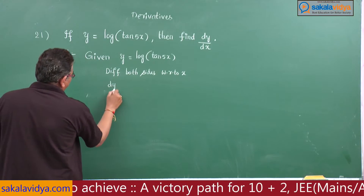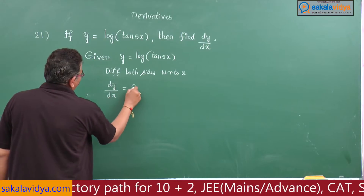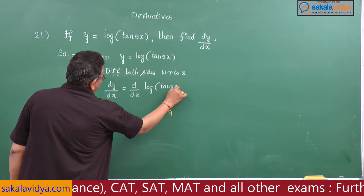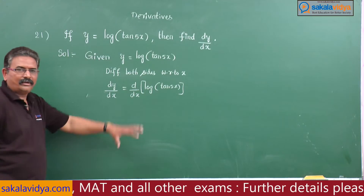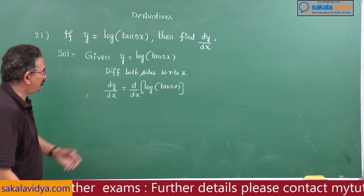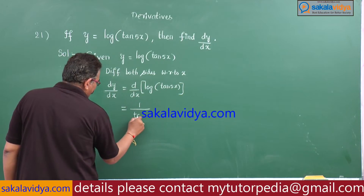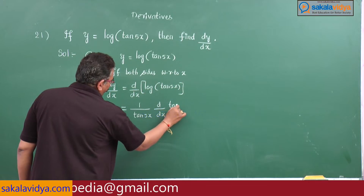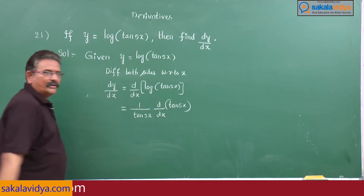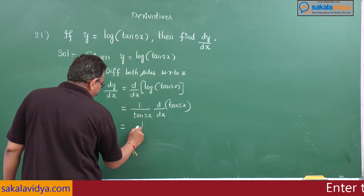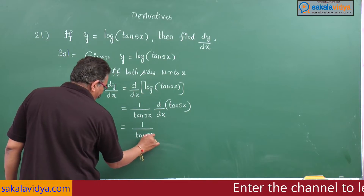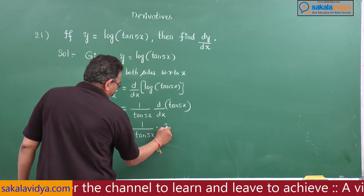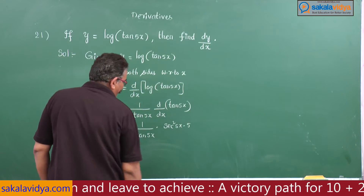dy/dx equals d/dx of log of tan 5x. Using the log differentiation rule — log u differentiates to 1/u times du/dx — this gives 1 by tan 5x into d/dx of tan 5x. The derivative of tan 5x is sec² 5x, and the derivative of 5x is 5.